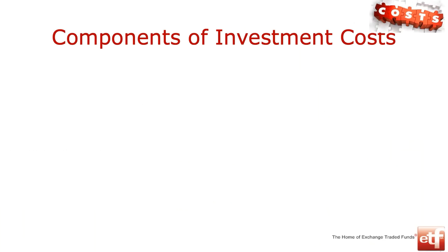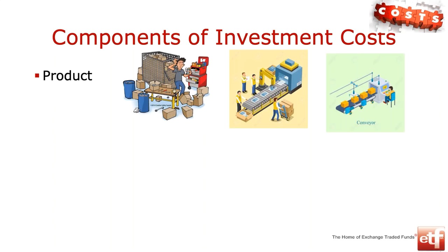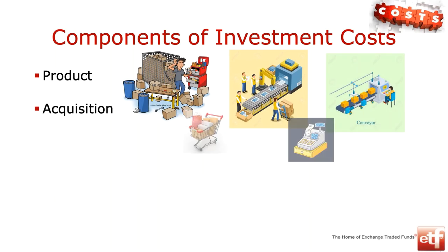Let's get straight into our conversation around the components of investment costs. My little graph at the top has got five components because I'm going to be talking about five different components of investment costs. The first thing is actually putting together an investment product of some sort — what goes into the manufacturing of such a product and what are those types of costs?